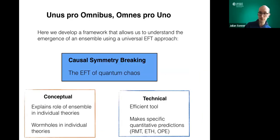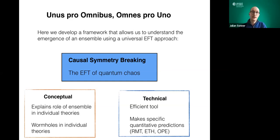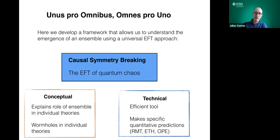The slogan I've chosen is 'one for all, all for one' — one theory can look like a whole ensemble of theories, and a whole ensemble of theories can be associated with one particular theory. This is the idea of the emerging ensemble. Technically, this works via causal symmetry breaking: a simple symmetry breaking principle that applies to a broad class of quantum chaotic systems. Like any symmetry breaking, it allows us to identify a set of very light modes which we use to construct an effective field theory — one that allows us to precisely characterize quantities which are given by ensemble-like answers.